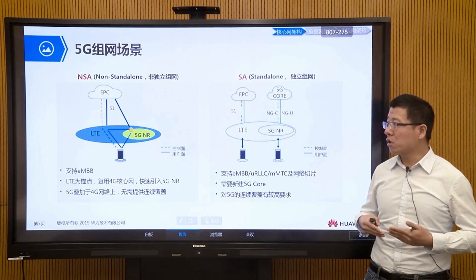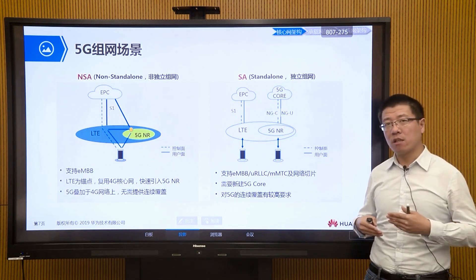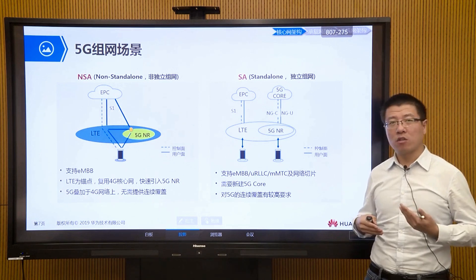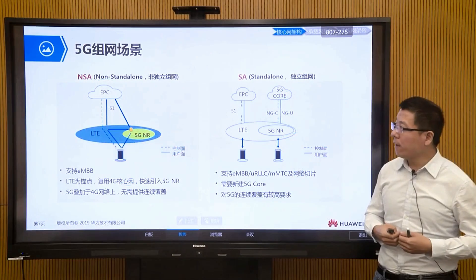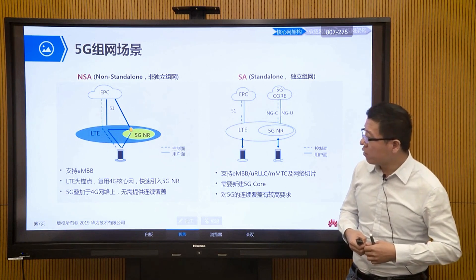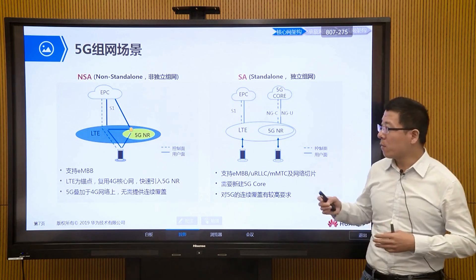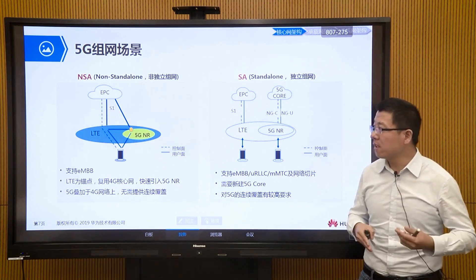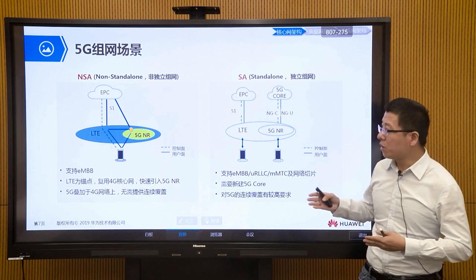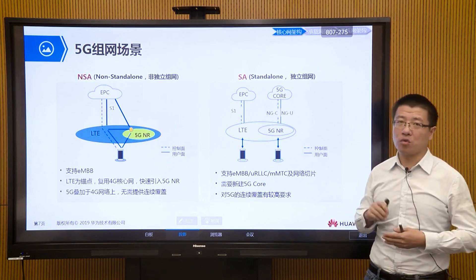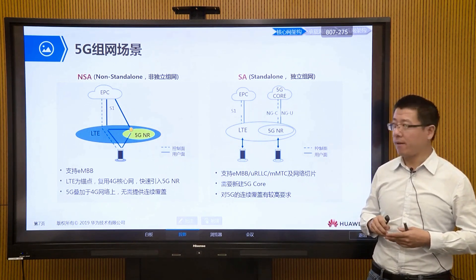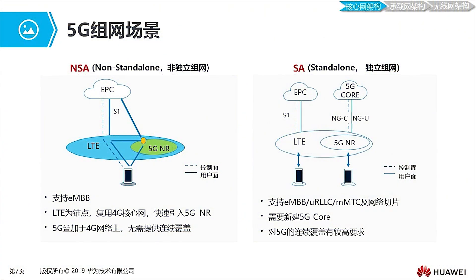In this scenario, our dual-mode terminal can access 4G, and then take the 5G base station or 5G cell as an auxiliary station or add an auxiliary cell. In this way, we can achieve higher data rates. This is our NSA non-standalone networking scenario. We can see that the dashed lines represent our control plane signaling, all going through the 4G LTE base station to access the core network. The green 5G base station only has solid lines — it only does user plane data forwarding.